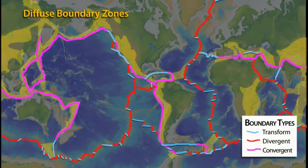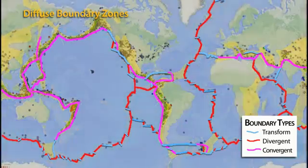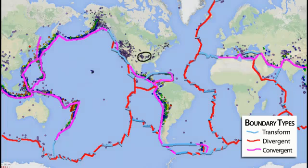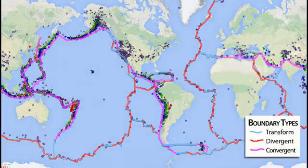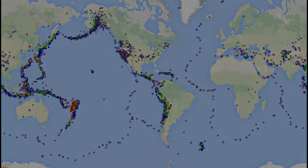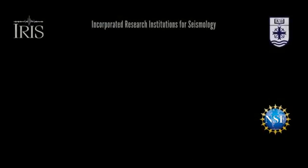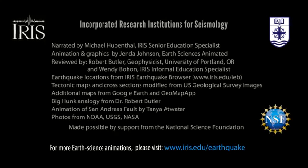In addition to these three boundaries, there are also diffuse boundary zones in which deformation occurs over a wide region. Although less common than earthquakes along plate boundaries, earthquakes in the interior part of plates, called intraplate earthquakes, do occur. Nevertheless, tectonic activity and earthquakes are chiefly concentrated at or near plate boundaries, where many geologic features including volcanoes, mountains, trenches, and tsunamis are in a constant state of change.